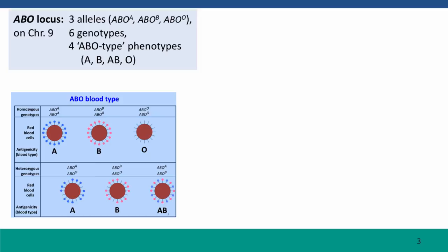First, to think about an example where alleles of different loci act independently, we're going to go back to thinking about the ABO locus that affects which sugar modifications are placed on the surface of red blood cells. You remember from Module 3 that there are three alleles — A, B, and O — and that A and B cause different sugars to be produced on the surfaces of red blood cells. O puts no sugar on. There are six possible genotypes and four possible phenotypes, the phenotype being an antibody test that detects which sugars are present. So both AA homozygotes and AO heterozygotes are type A; BB and BO are type B; OO is type O; and AB heterozygotes are blood type AB.